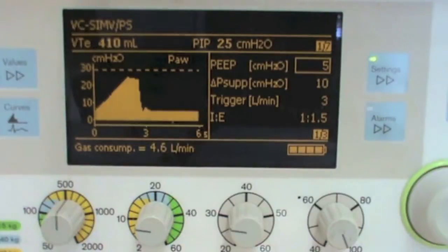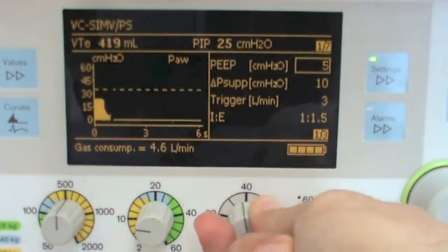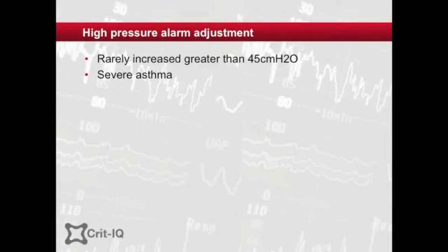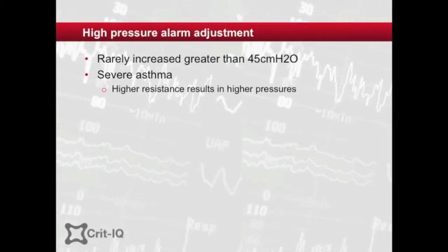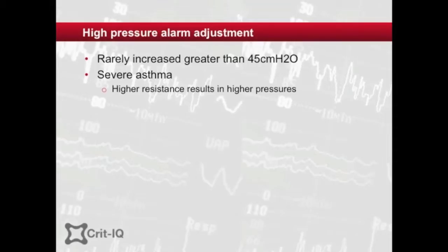The peak pressure alarm is rarely modified, though in occasional circumstances it is increased. In severe asthma, there is a homogeneous increase in airway resistance to gas flow. The higher resistance means that for any given volume, the pressure generated will be higher. As asthma is largely a disease of limited expiration, a key feature of the ventilation strategy is to lengthen expiratory time as much as possible. This sometimes requires inspiratory flow to be increased so that the tidal volume can be delivered as quickly as possible, which also contributes to raised peak pressures.